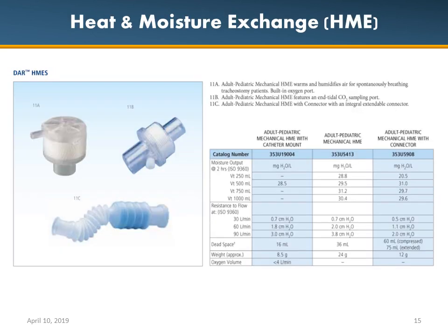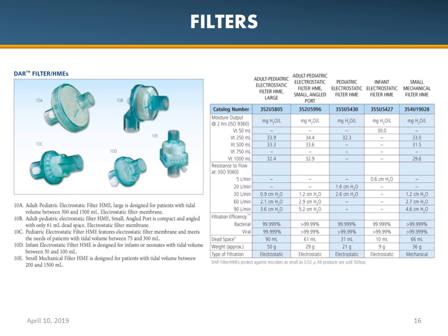We also have heat moisture exchange valves, which help keep vital moisture inside the lungs instead of blowing it off and increasing the thick, tenacious secretions that often cause airway obstructions. Anyone on a ventilator or with supplemental oxygen will most likely have a filter in place as well.